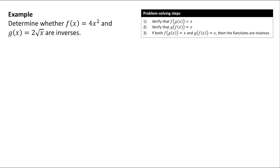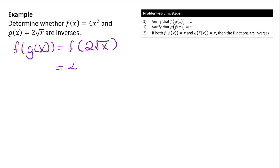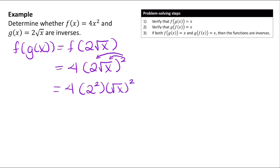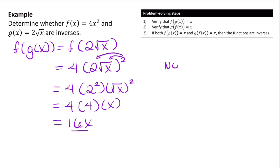Now let's determine whether f of x equals 4x squared and g of x equals 2 times the square root of x are inverses. Starting with f of g of x: that's f of 2 times the square root of x, so we get 4 times 2 square root of x squared. Using the property of exponents, squaring a product applies to both terms: 4 times 2 squared times the square root of x squared, which is 4 times 4 times x, giving 16x. Since this doesn't equal x, these two functions are not inverses.